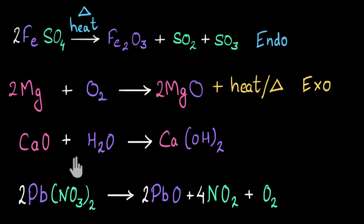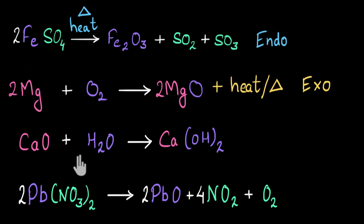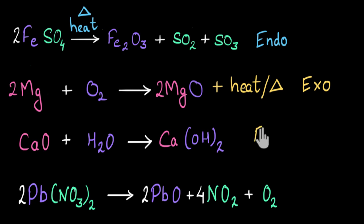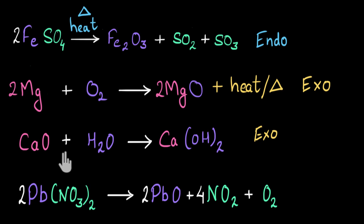Here I can see that calcium oxide plus water is giving calcium hydroxide — two reactants combining to give one single product, which is an example of a combination reaction. In general, combination reactions give out more heat, so I can guess that more heat will be given out here. And yes, this is correct — when you add water to calcium oxide, if you touch the container, it becomes warm, meaning a lot of heat is given out. That's why this is exothermic.